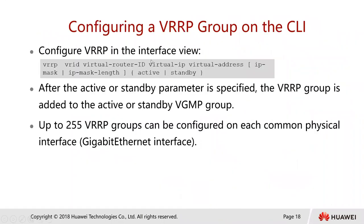To configure the interface, you go into your firewall system view and type in the VRRP commands. You specify that the VRRP group is added to the active-standby group mode. You can add up to 255 VRRP groups — up to 255 VRRP groups can be configured on each common physical interface or gigabit Ethernet interface. Take note of that, as it appears frequently in exam questions.